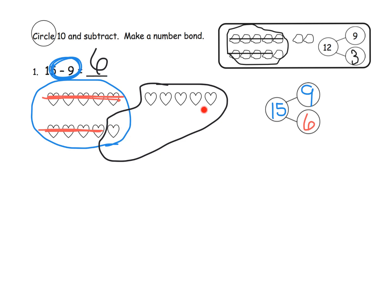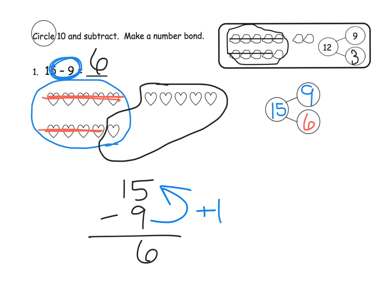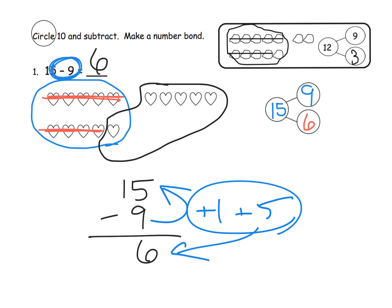This is laying the groundwork for students to eventually start saying: here's 9, add 1 plus 5 and get 6. We want to guide students towards this strategy — not the standard algorithm yet. We want students to develop an understanding of shortcuts, rather than just memorizing subtraction facts. The number bond shows that 9 plus 1 gives us 10, plus 5 more gives us 15, so our answer is 6.